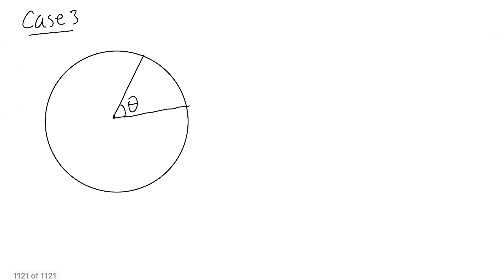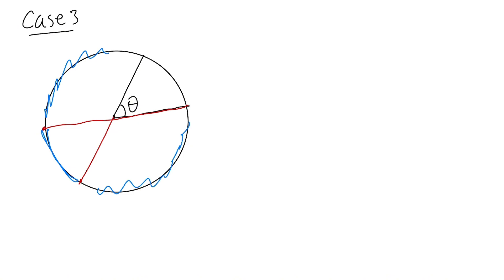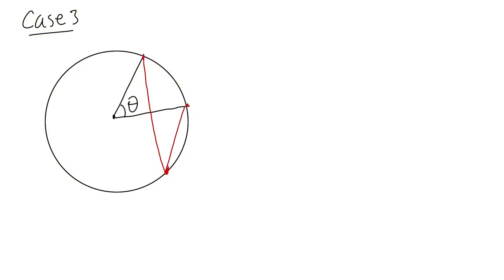For Case 3: Case 1 was the diameter, Case 2 was a point anywhere in that half of the circle. Case 3 is a point on the opposite side — let's pick a point right here. When we connect the points, it looks a bit different, but this is our angle alpha. This case is a little trickier.